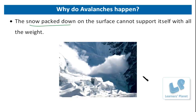Most avalanches begin within weak layers of snow. These weak layers evolve within the snowpack or they form on top of the snow and become buried. Eventually these weak layers can no longer hold up the weight of the overlying snow, and they give way, causing the snow above them to break free and slide downhill — this is what we call an avalanche. When additional factors such as a person's step are introduced, this helps to loosen the snow and an avalanche occurs. So there are man-made influences too which are main causes of avalanches.